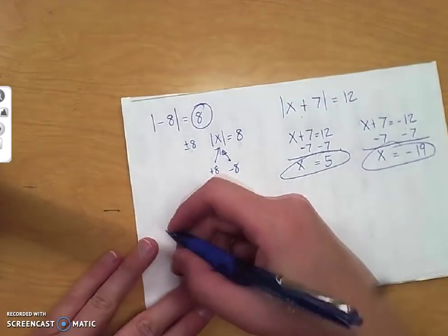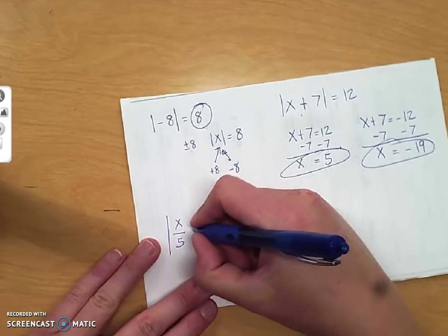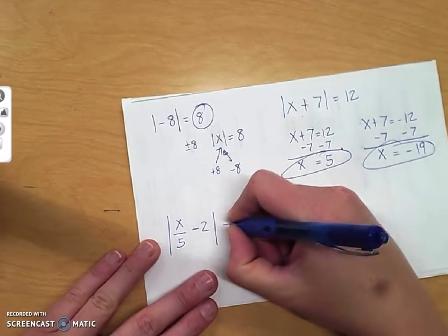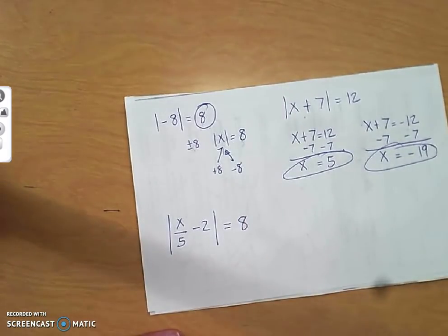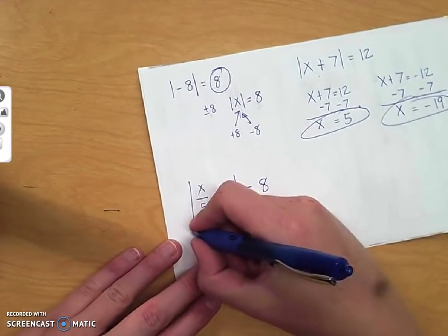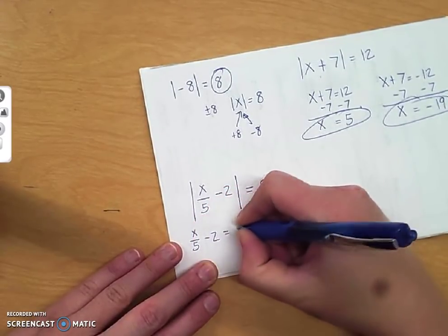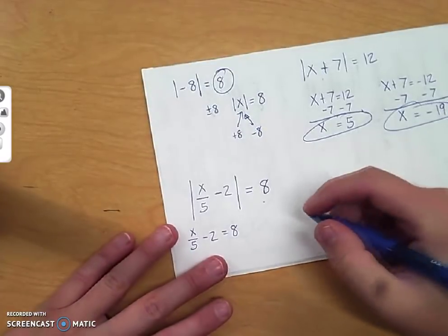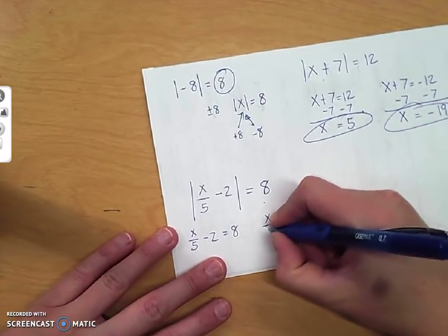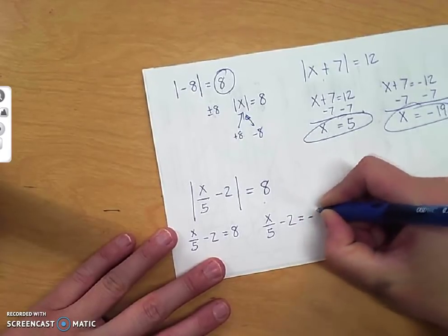Our third one. x over 5 minus 2 equals 8. Absolute value is already by itself, so I have two possibilities. x over 5 minus 2 equals 8, or x over 5 minus 2 equals negative 8.